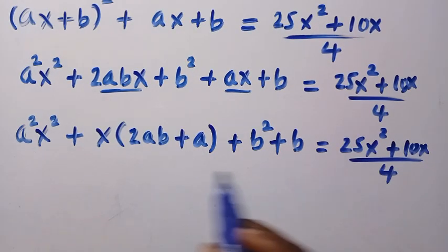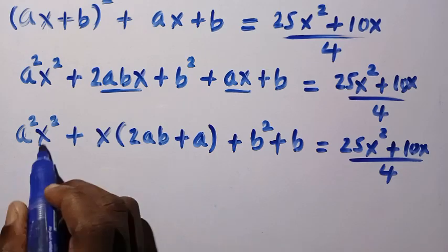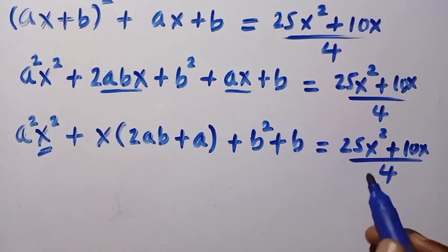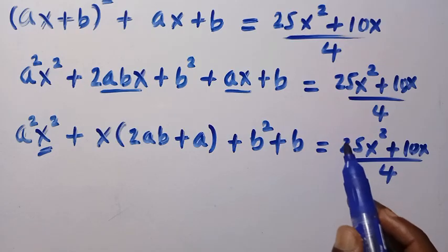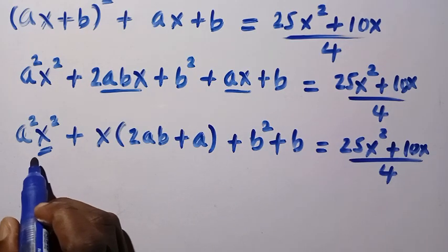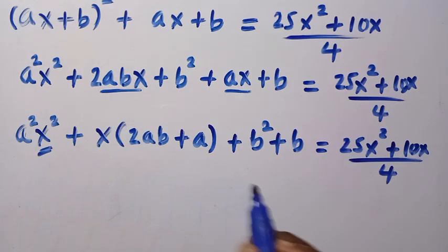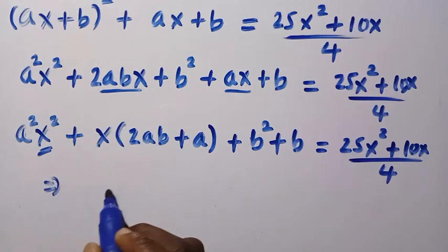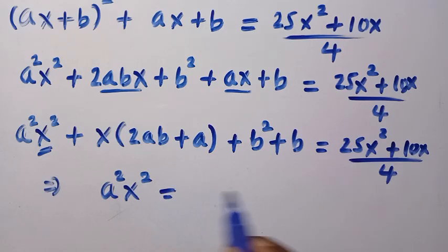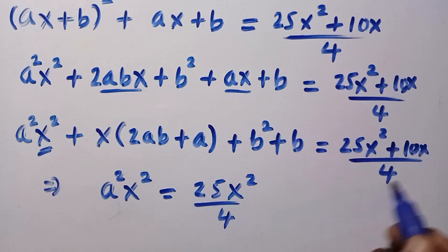Getting here, let's try and compare this. Here we have x squared and this is also x squared. But this x squared, which is 25x squared, is over 4. We want to combine this together. By combining, we have a squared x squared will be equal to 25x squared divided by 4 at this side.